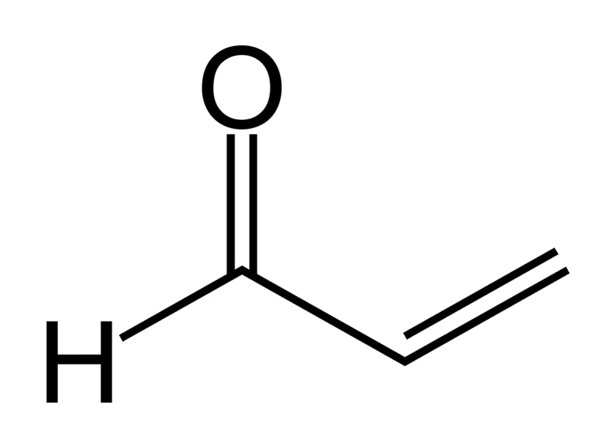Cork taint is a wine fault mostly attributed to the compound 2,4,6-trichloroanisole (TCA), although other compounds such as guaiacol, geosmin, 2-methylisoborneol, 1-octen-3-ol, 2,3,4,6-tetrachloroanisole, pentachloroanisole, and 2,4,6-tribromoanisole are also thought to be involved. TCA most likely originates as a metabolite of mold growth on chlorine-bleached wine corks and barrels. It causes earthy, moldy, and musty aromas in wine that easily mask the natural fruit aromas, making the wine very unappealing. Wines in this state are often described as corked.